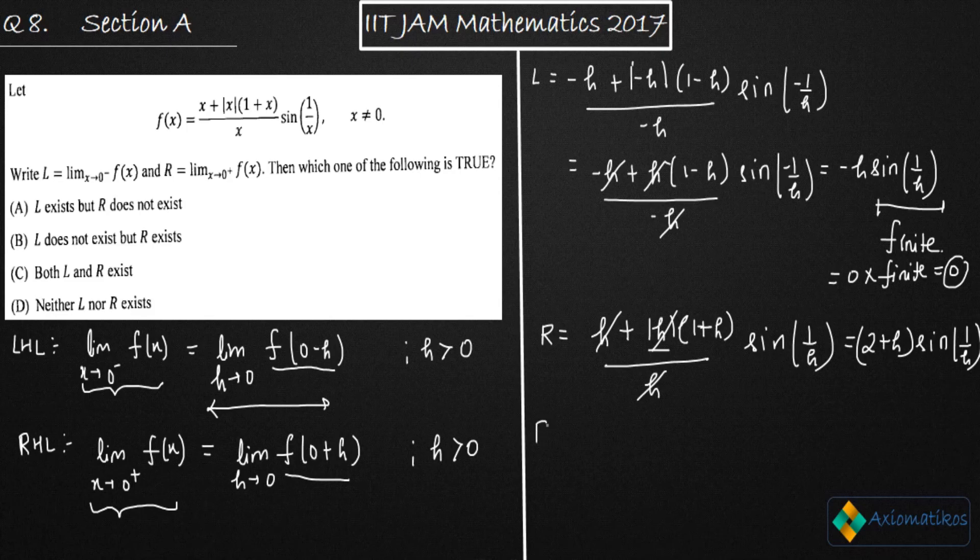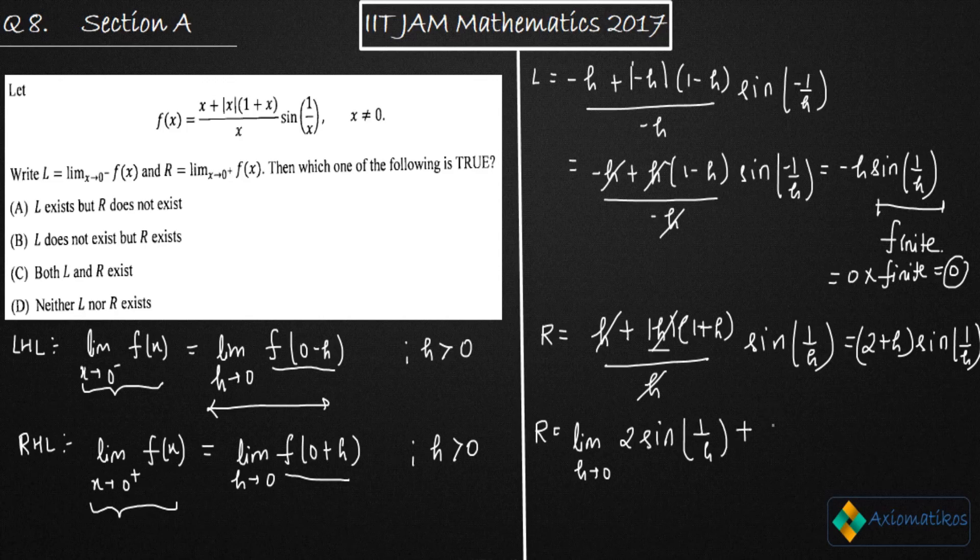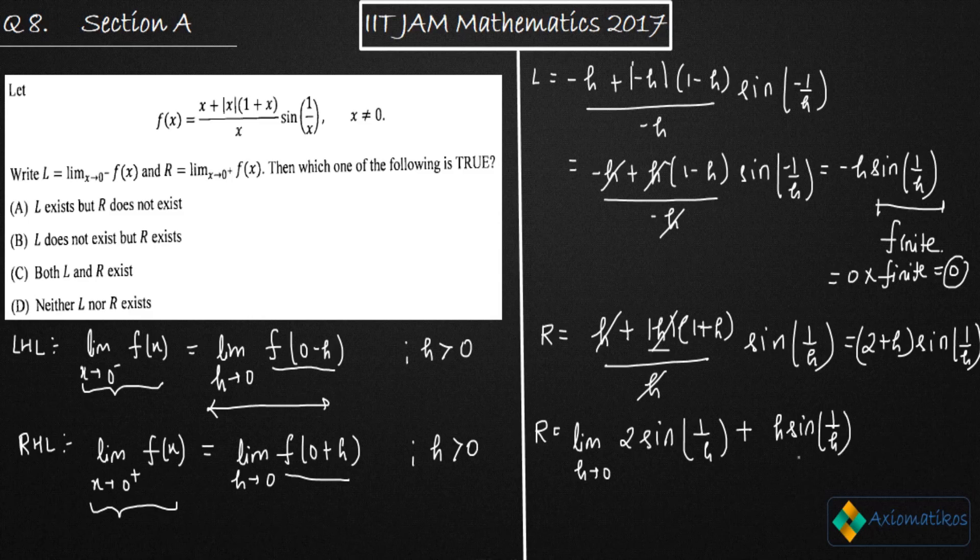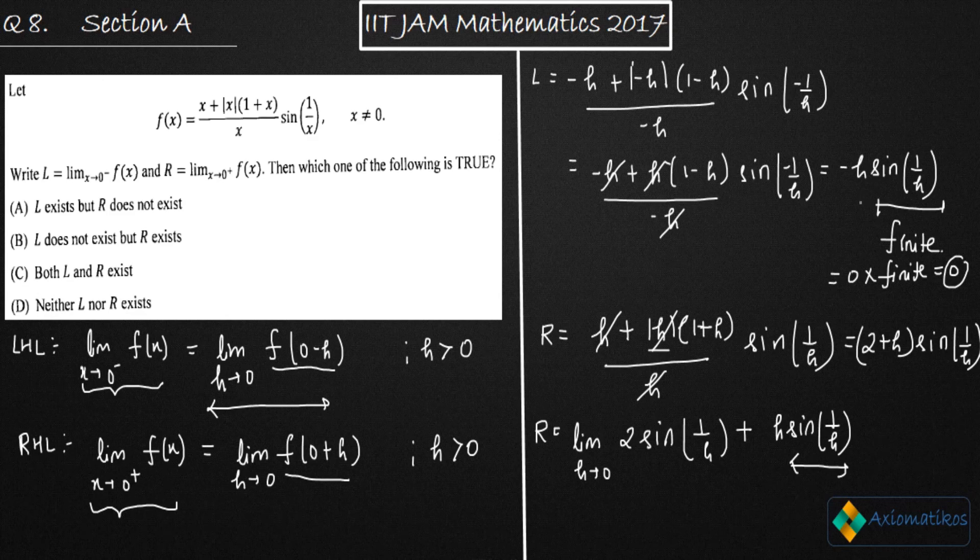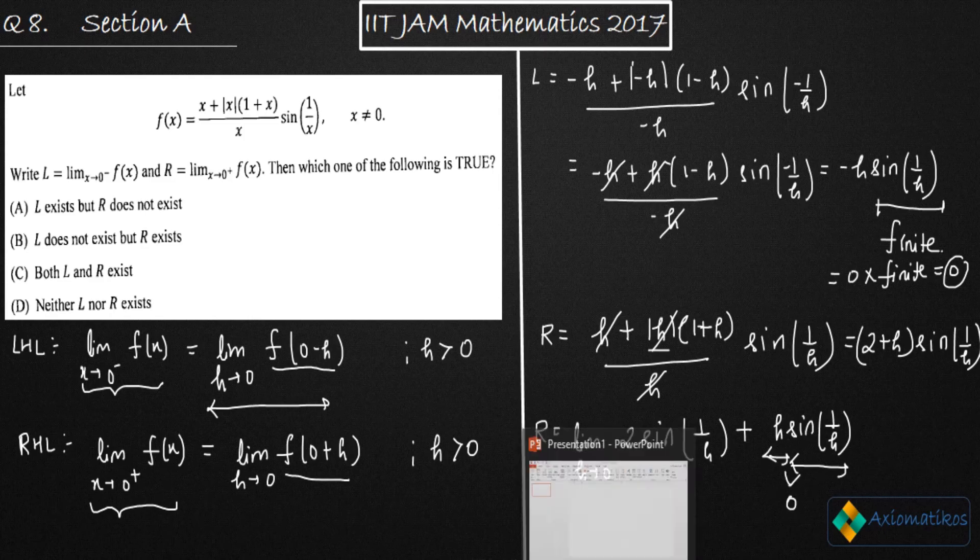So what is your R? Your R will look like limit h goes to zero, two sine one over h. Now again, use the thing we have used here. This sine one over h is finite quantity when h goes to zero, and this one is zero. So this thing will end up with zero.